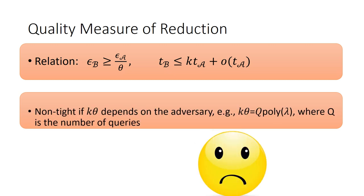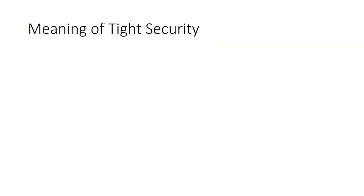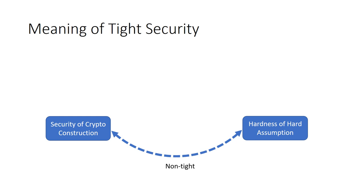But if k theta depends on the adversary, for example, k theta equals Q times polynomial of lambda, where Q is the number of queries conducted by the adversary. Achieving tight security is a meaningful task, particularly when one can prove the same or perhaps slightly less efficient scheme has a tight reduction than a non-tight one.